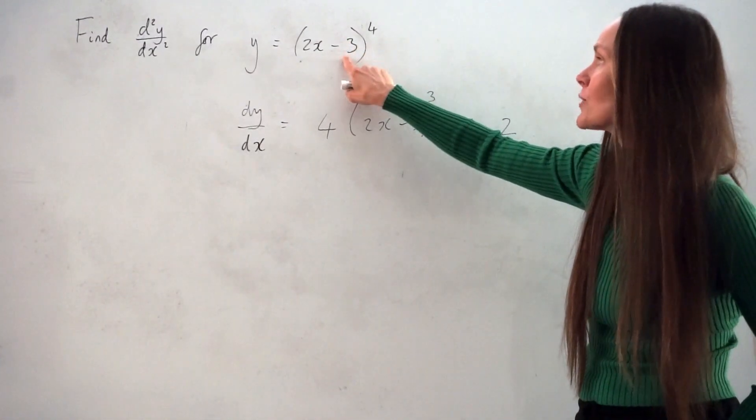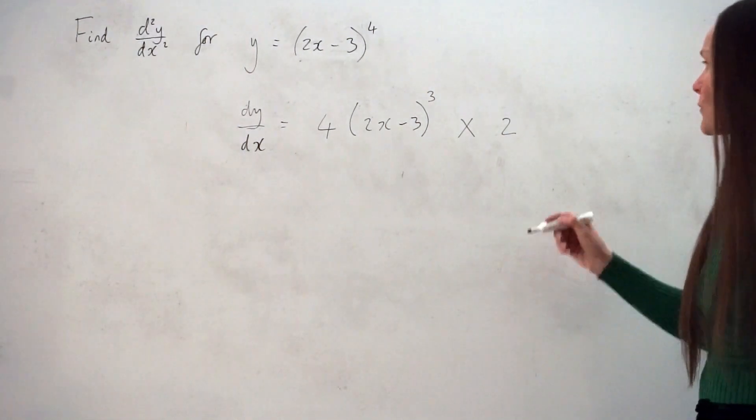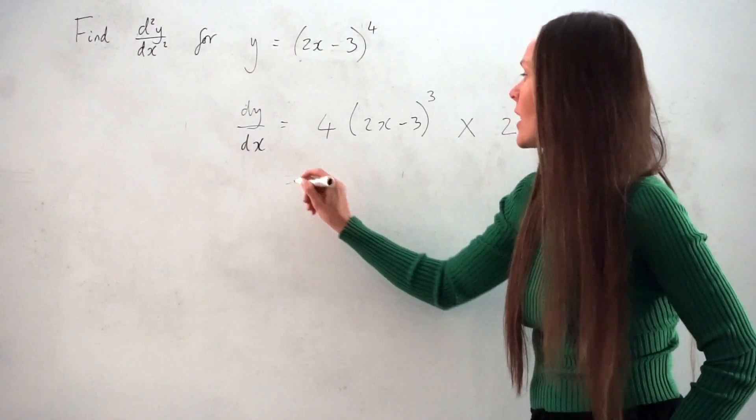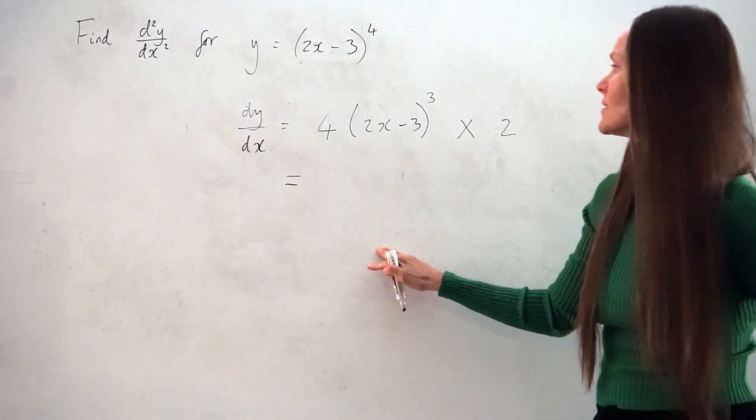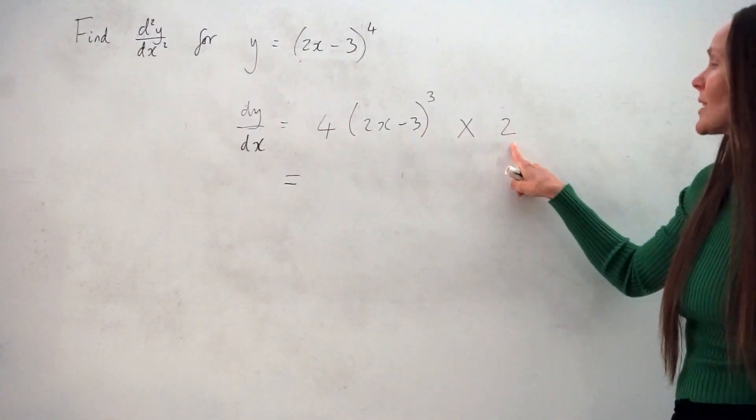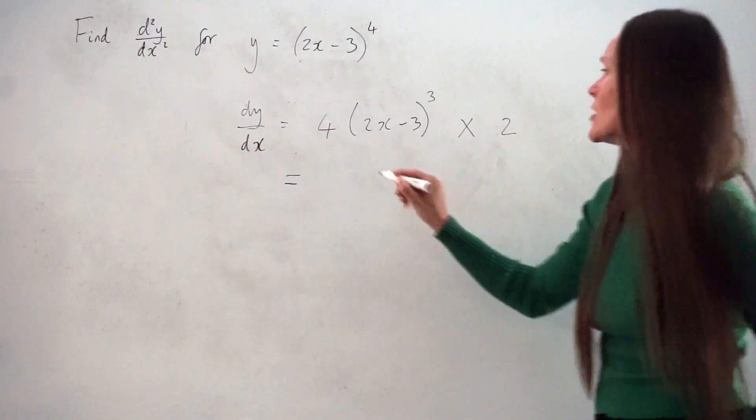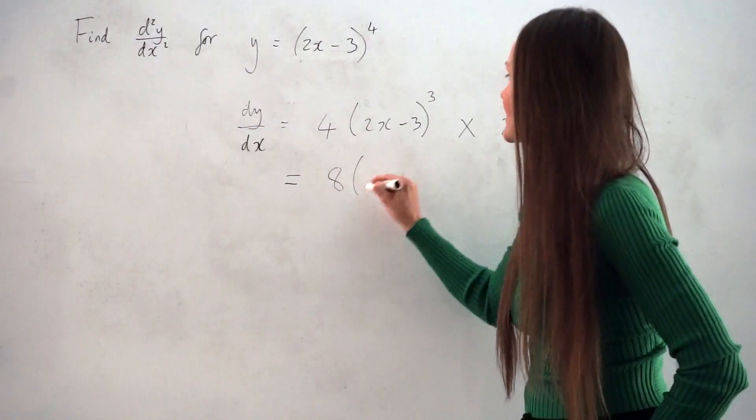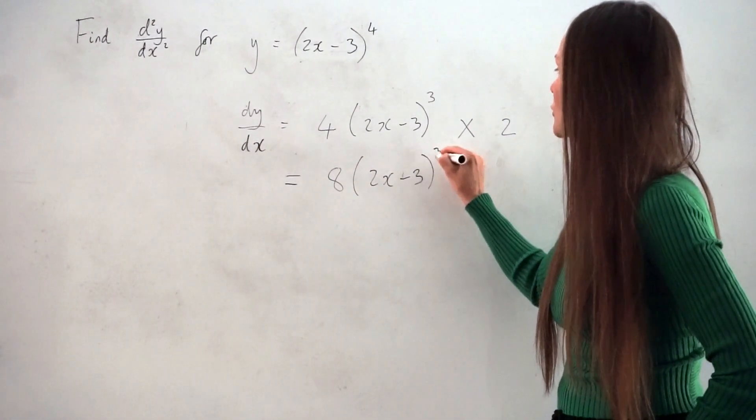And if I differentiate -3, I get 0. Remember, whenever you differentiate a constant, you get 0. So now if I simplify this, I can multiply the numbers here, 4 and 2 together. So 4 times 2 is 8. So the answer is 8(2x - 3)³.